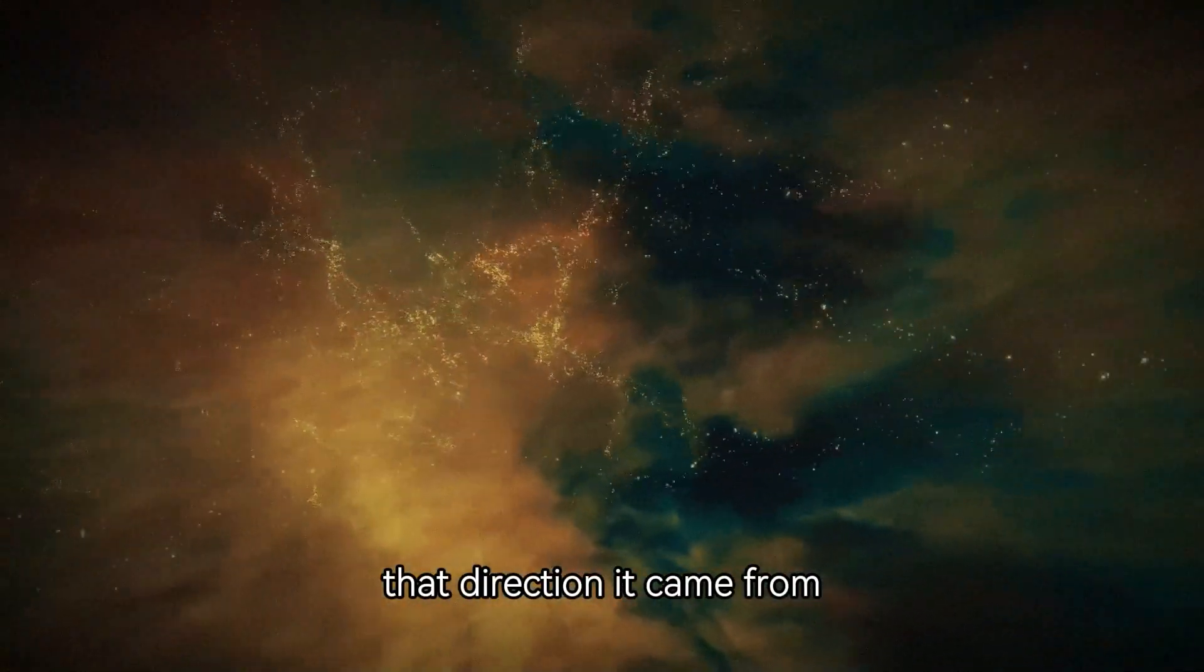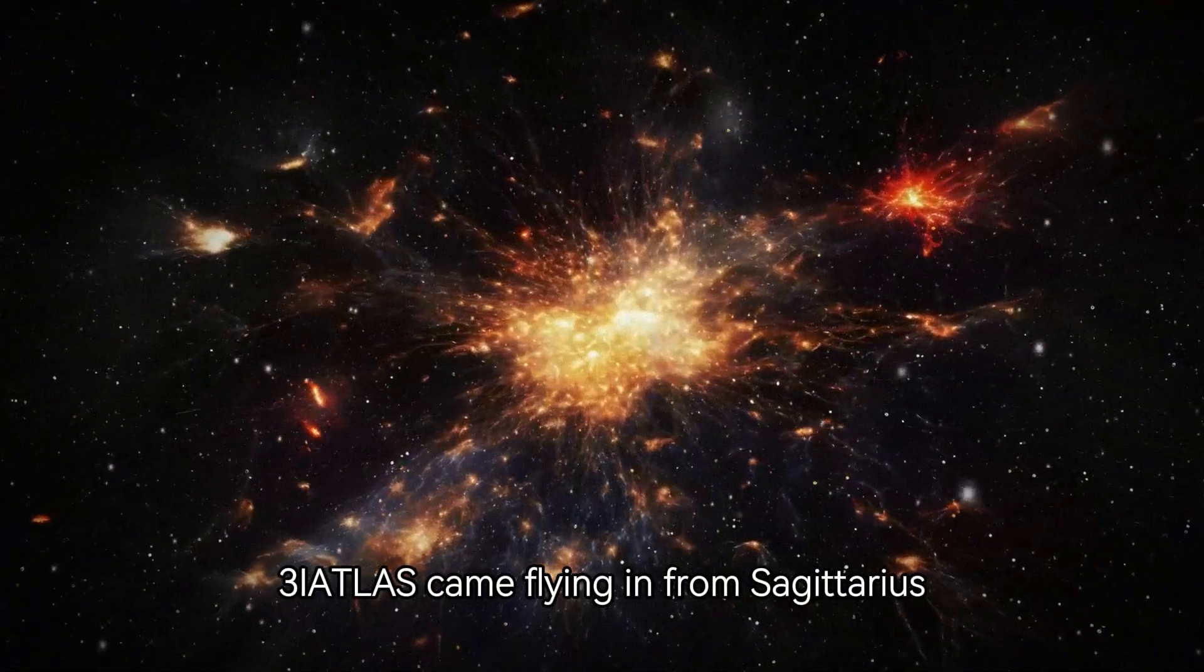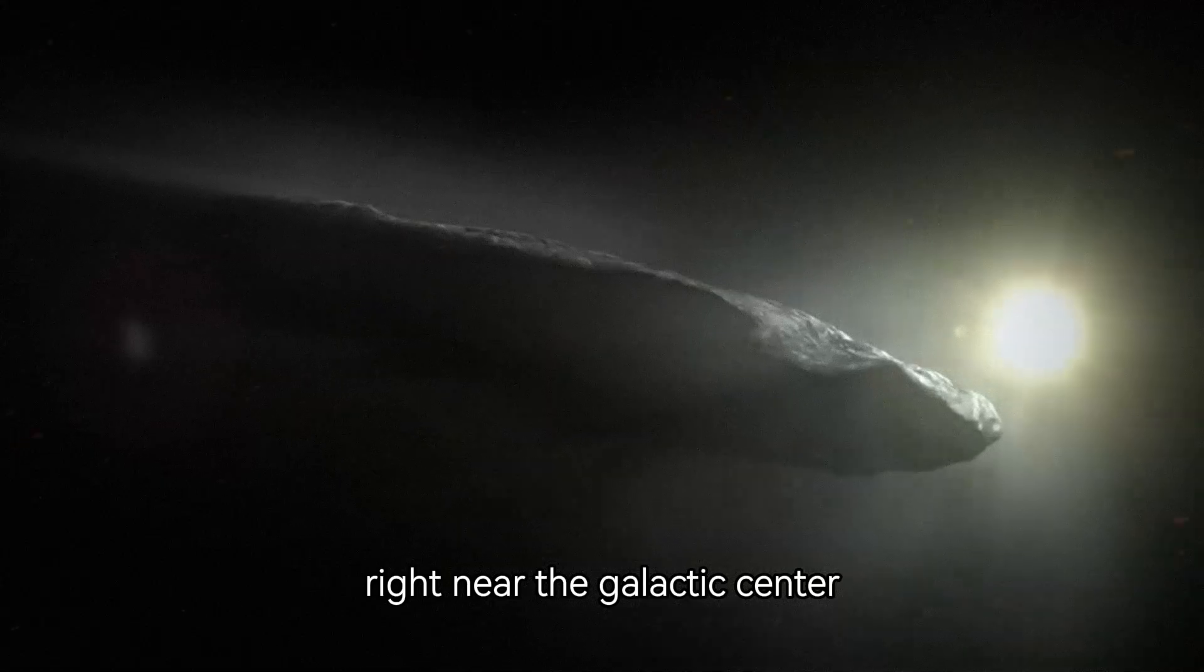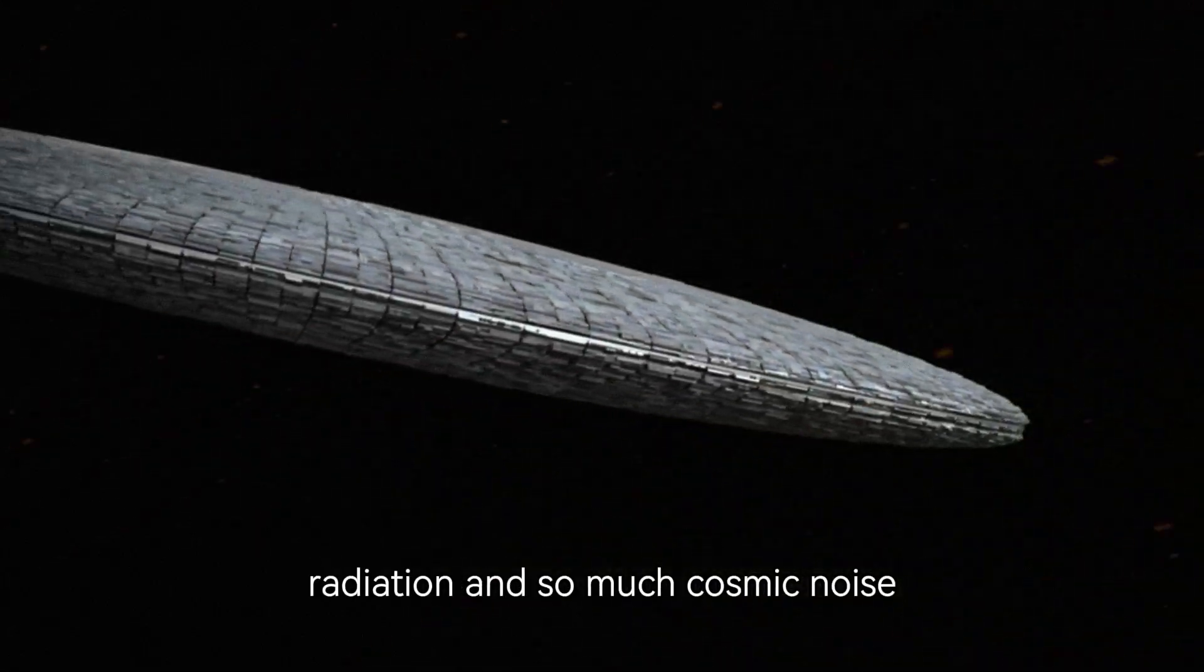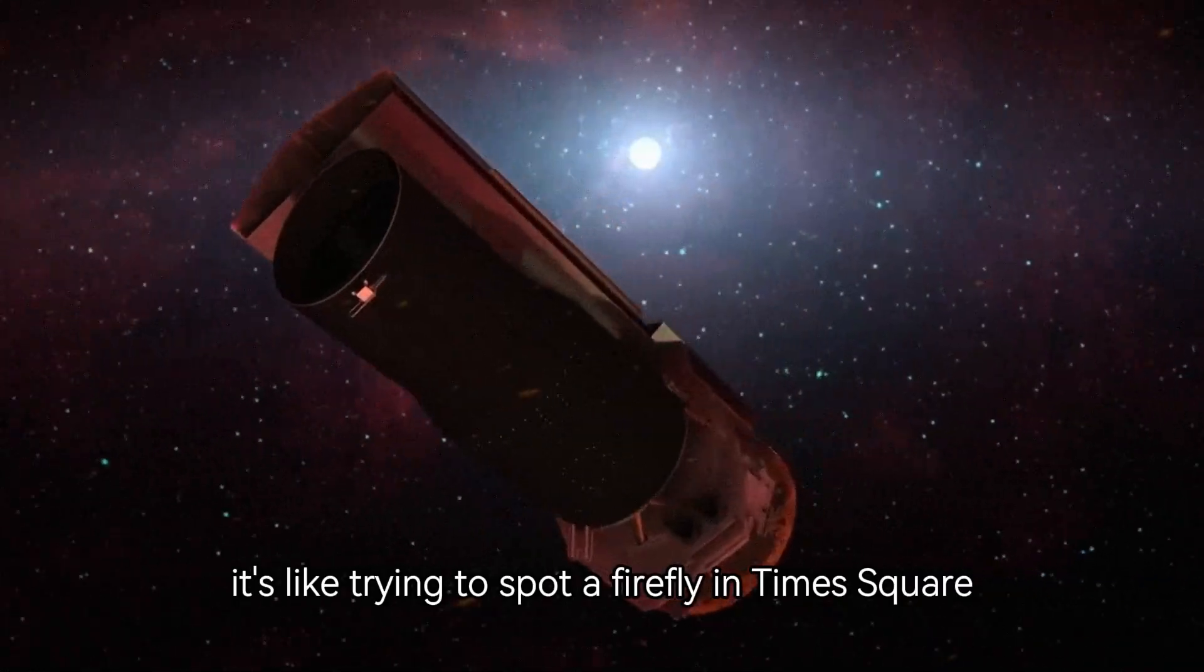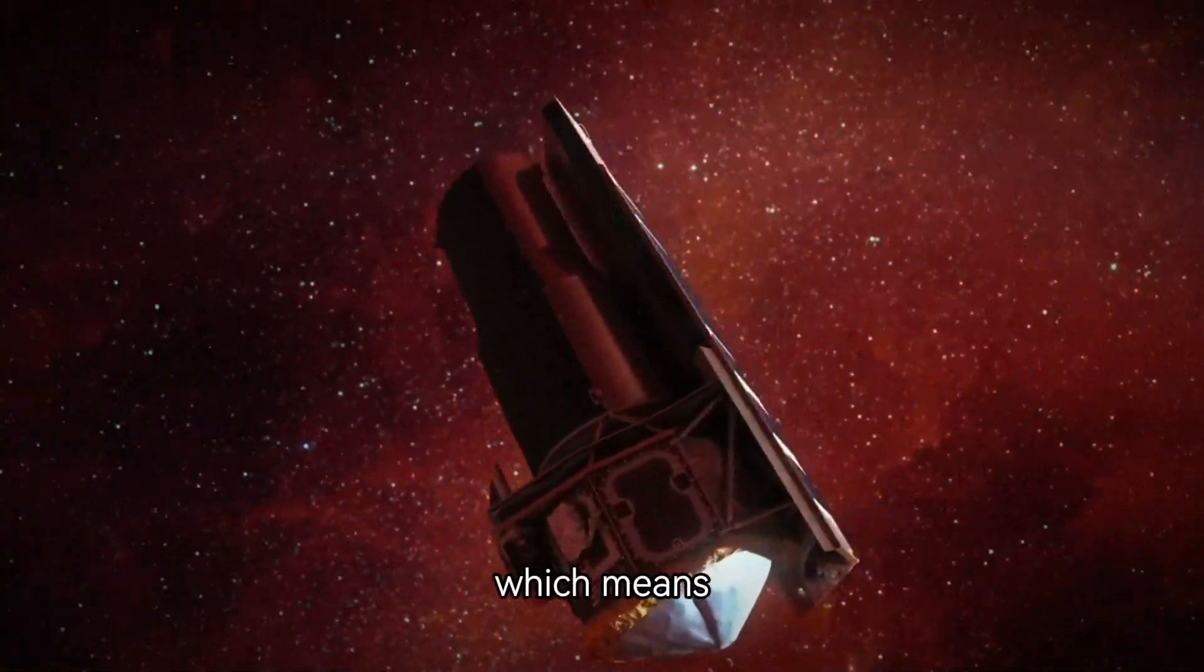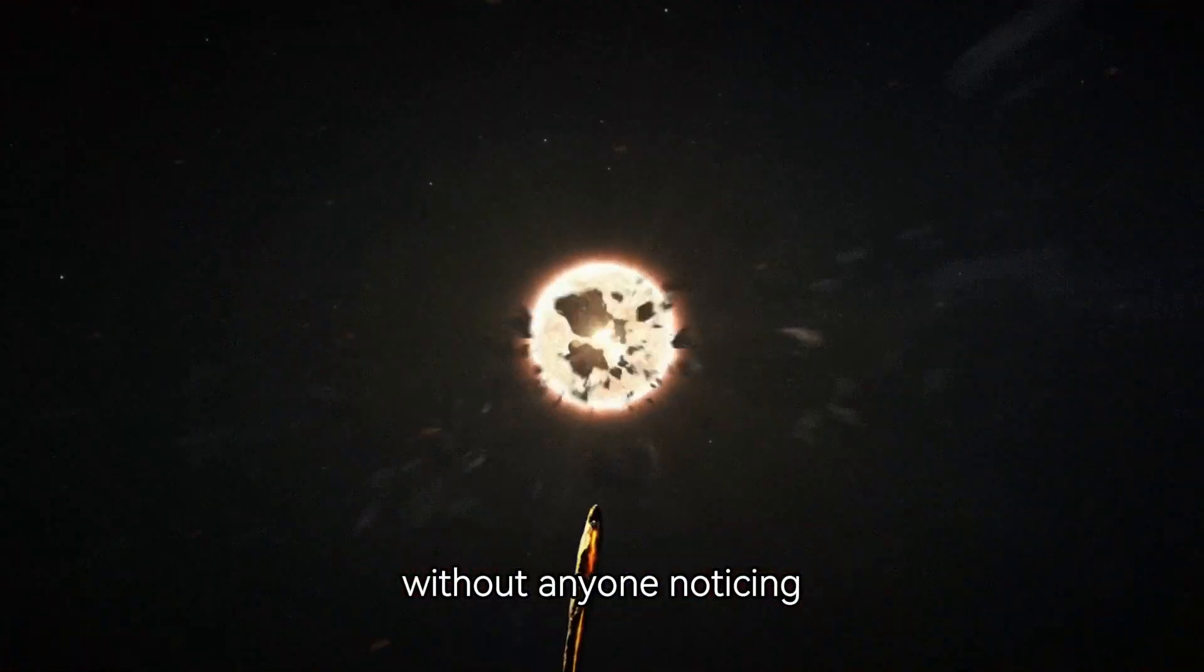That direction it came from is no small detail. 3i Atlas came flying in from Sagittarius, right near the galactic center, a zone packed with stars, radiation, and so much cosmic noise. It's like trying to spot a firefly in Times Square. It's one of the hardest parts of the sky to watch, which means this thing could have been sneaking up on us for years without anyone noticing.